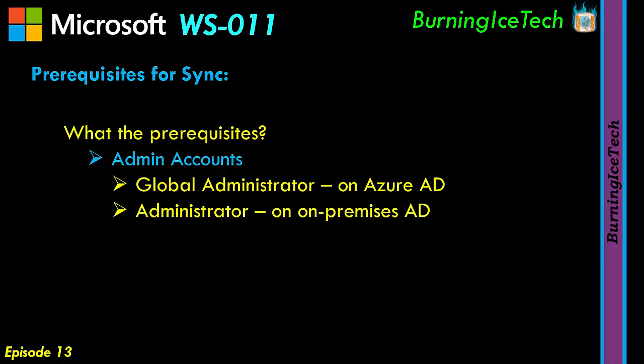Something else that needs to be set up is the Azure AD Connect tool — that's a tool you'll need to download. There are multiple ways to get it; downloading is very quick and easy. It's about 153 megabytes. Once you have that tool, you'll need to install it on your server on-premises. It's suggested you install it on your root active directory on-premises, though it's not compulsory. That tool is what does the synchronization — it's essentially a wizard that asks you for two admin accounts: one global admin for the cloud AD, and one administrator account on-premises.